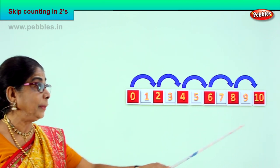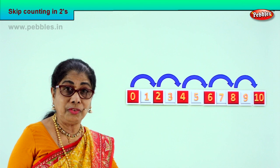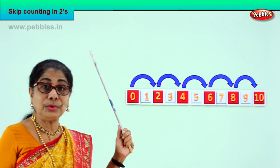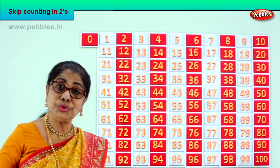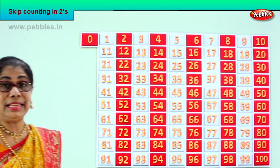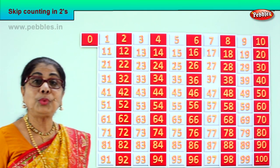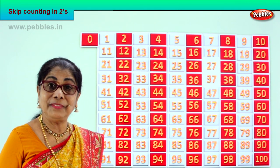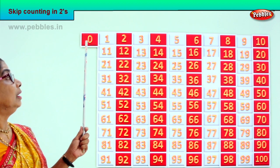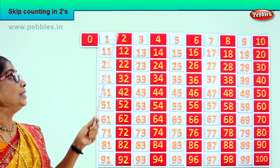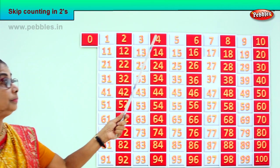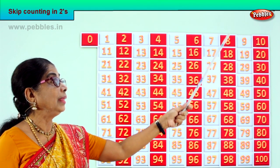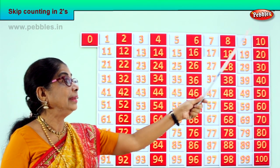Now we look at the full picture up to one hundred. Zero to one hundred. Now that you learned from two to ten, it's very easy. Look at the pattern we have here for you. So what did we do first? Two, four, six, eight, ten.